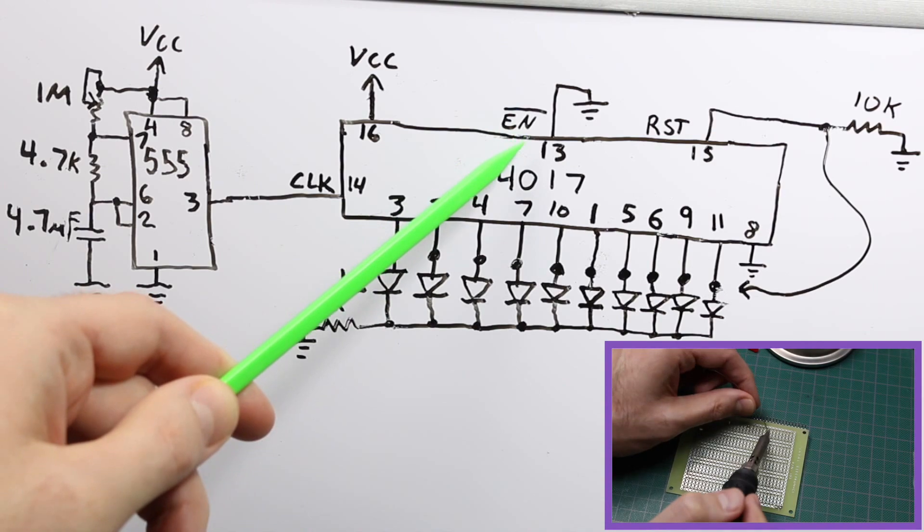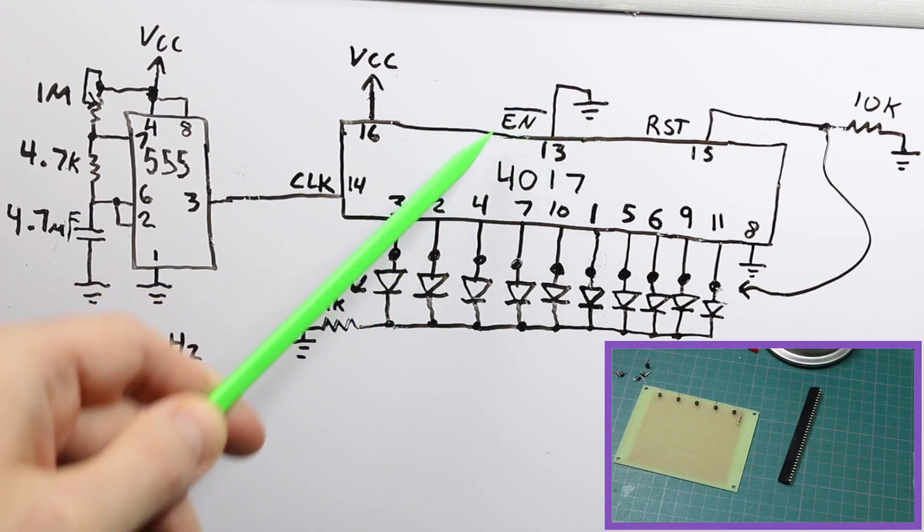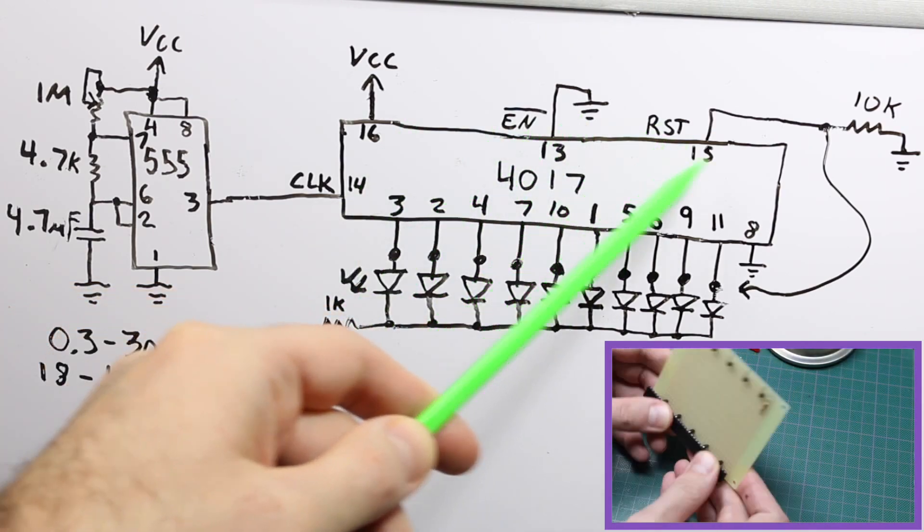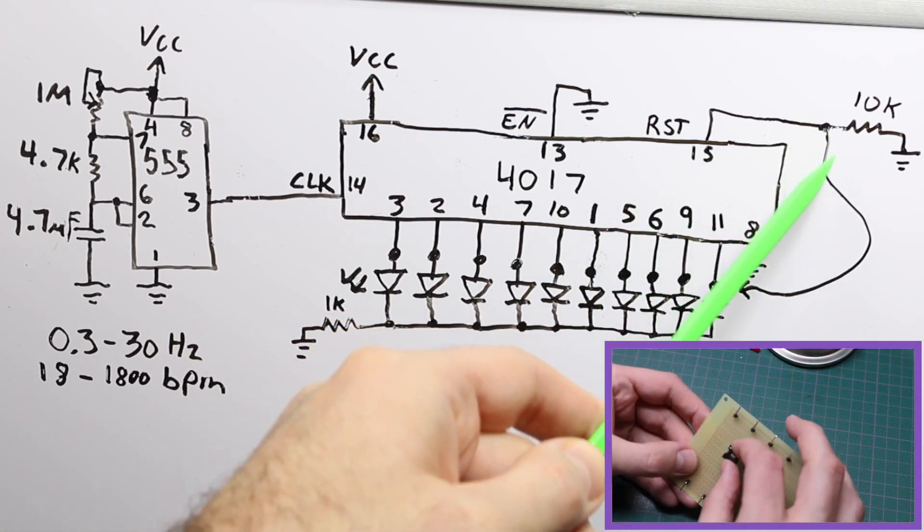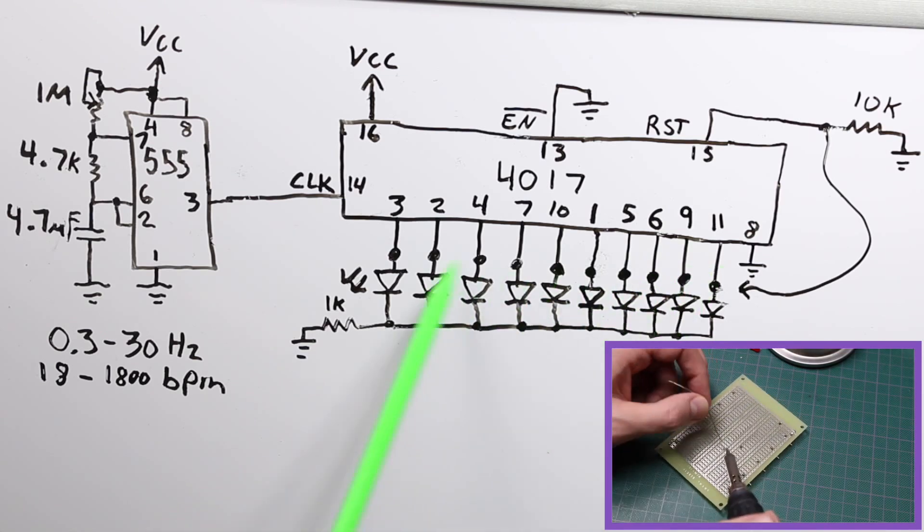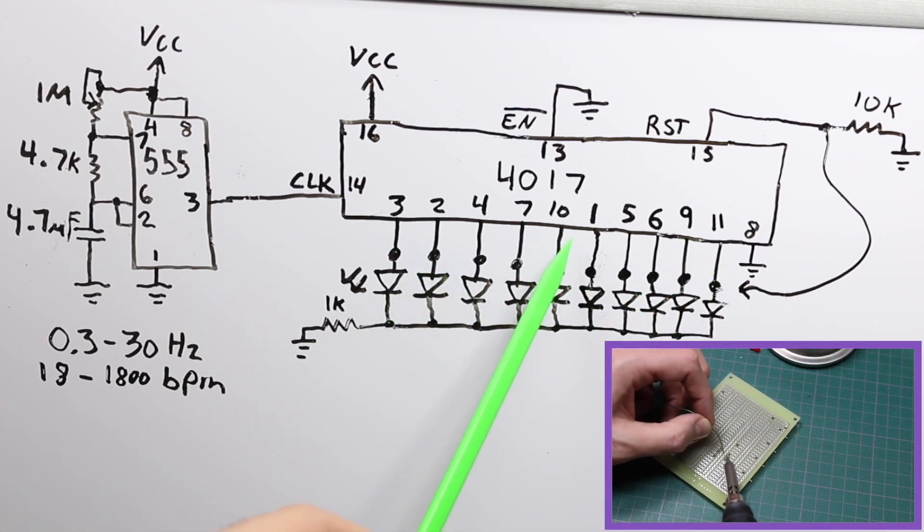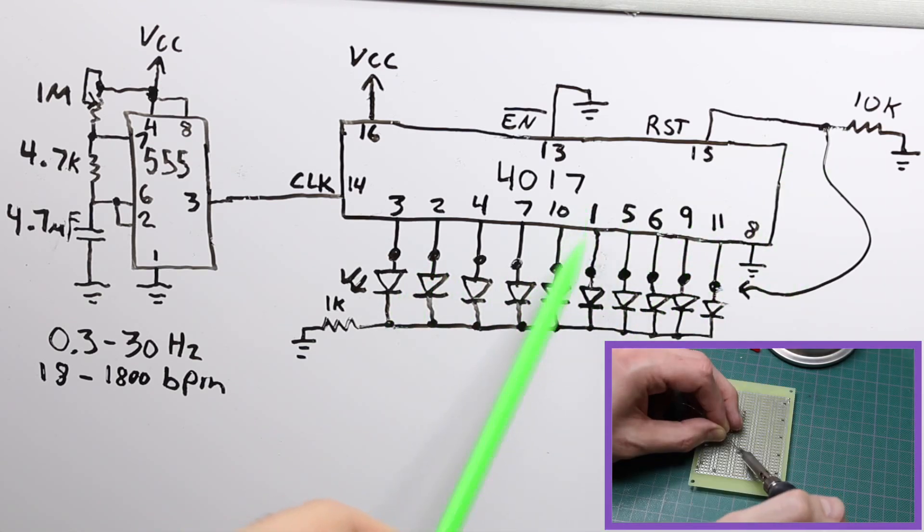Enable is active low, so I just keep that to ground so it's always running, and reset is active high. So I pull reset down normally, but optionally, I can add a wire to one of these outputs, and when a certain output goes high, if reset is connected there,